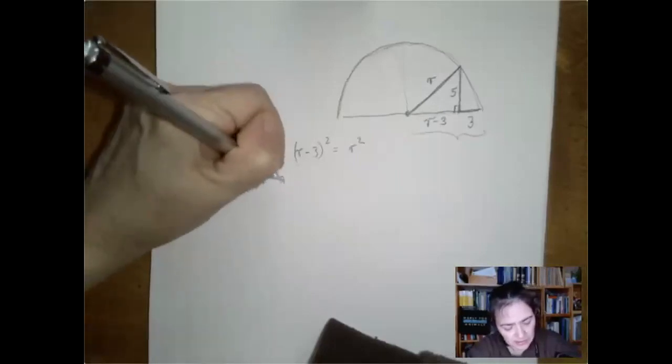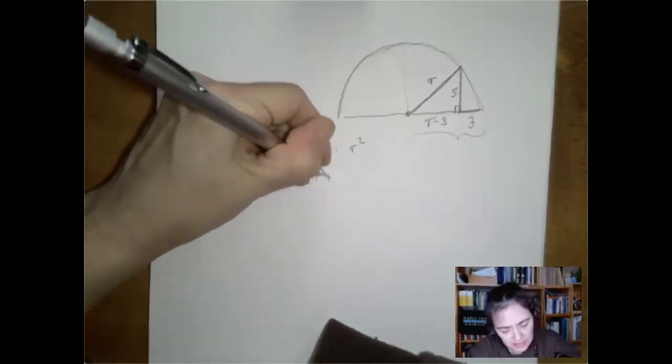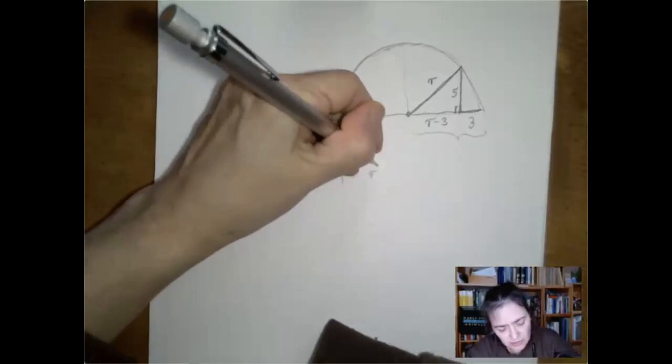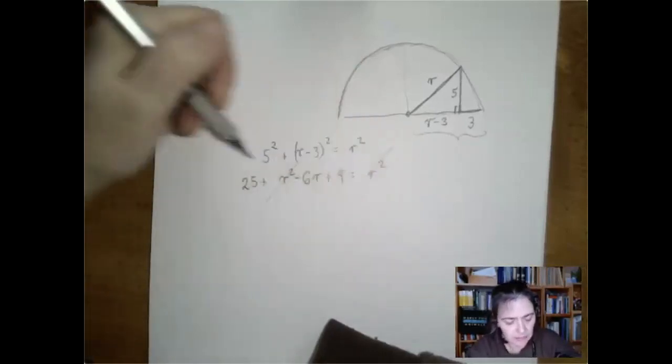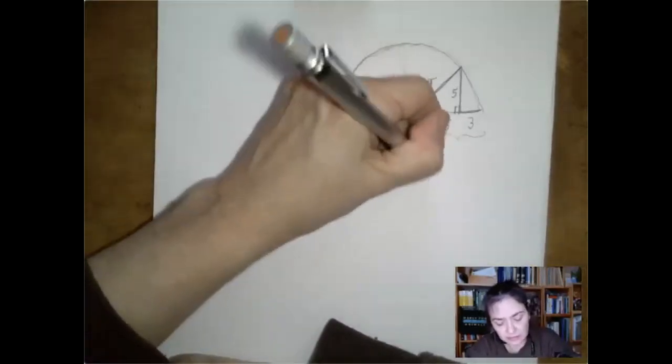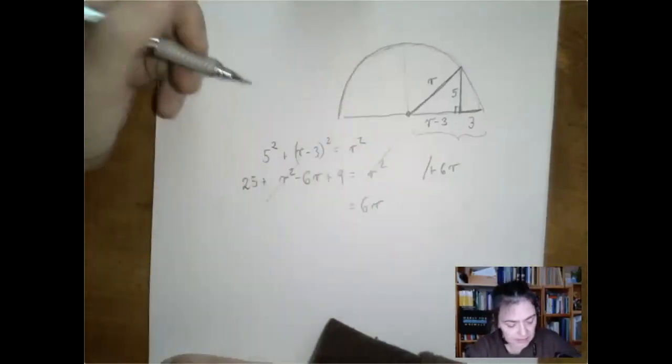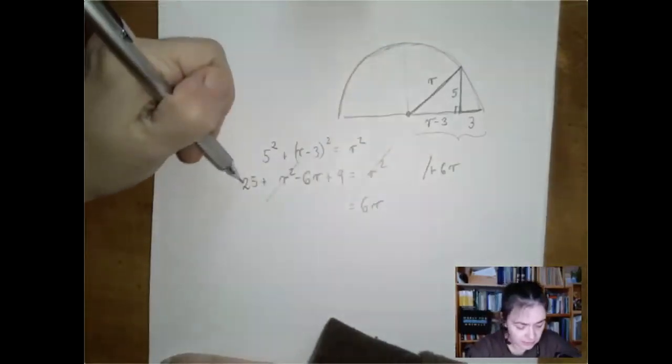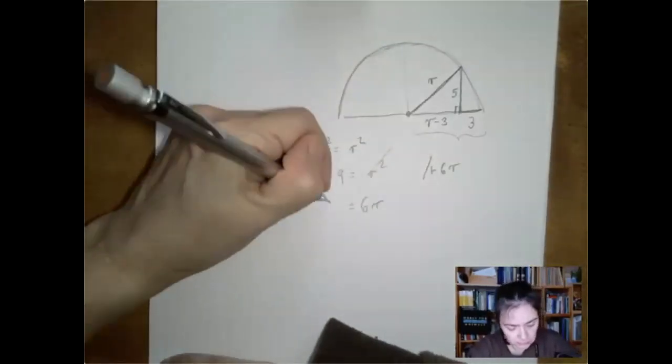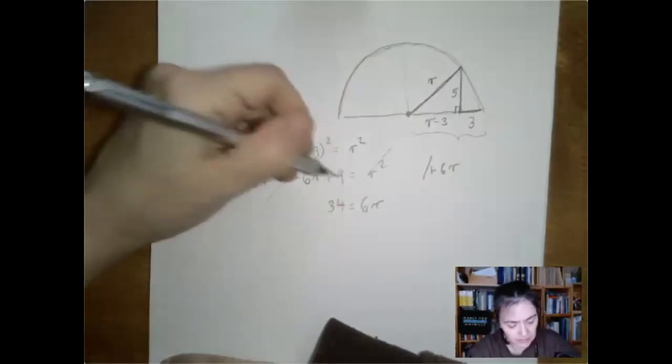25 plus r squared minus 6r plus 9 equals r squared. There we go. If we move 6r to the other side, we find that the other side is just 34, 25 plus 9.